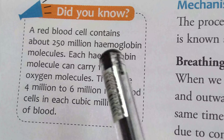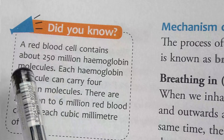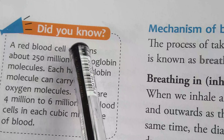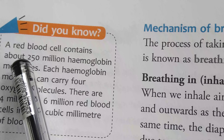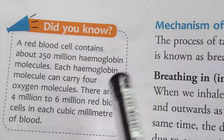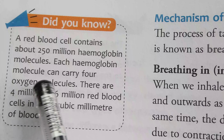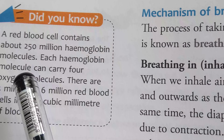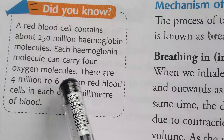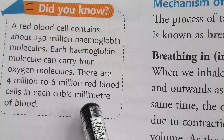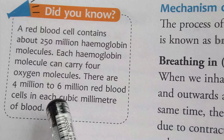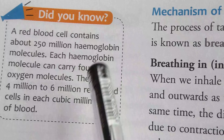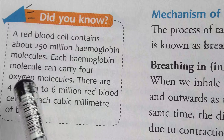A red blood cell contains about 250 million hemoglobin molecules. Each hemoglobin molecule can carry 4 oxygen molecules. There are 4 million to 6 million red blood cells in each cubic millimeter of blood.